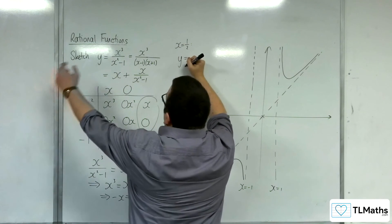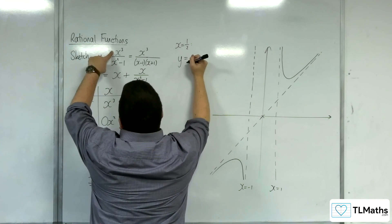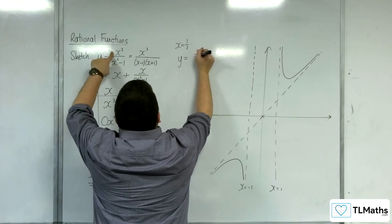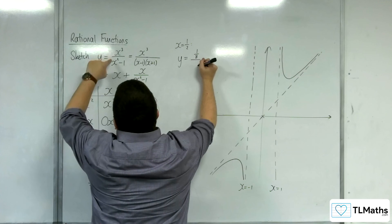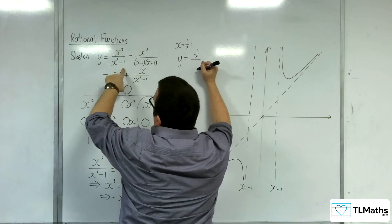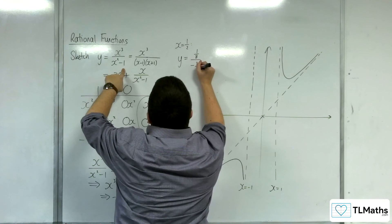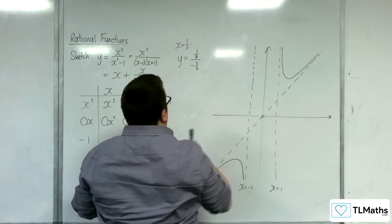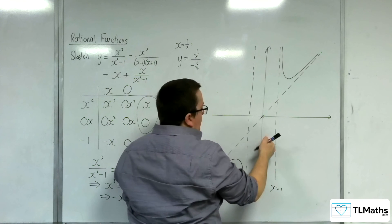So y equals, we're going to have (1/2)³, which is 1/8. In the denominator, we've got (1/2)², which is 1/4, take away 1, which is -3/4. So we've got a positive over a negative, so it's negative, so we know we're down here.